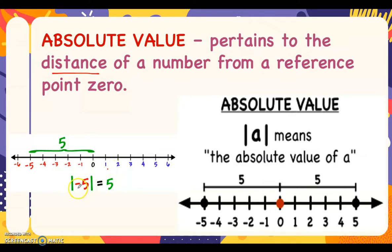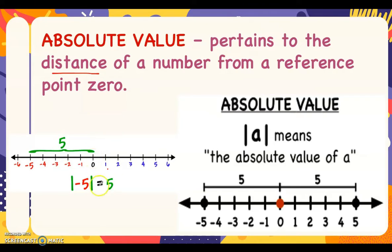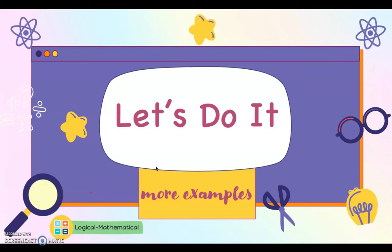For example, if we get the absolute value of negative five, the absolute value — the distance — is five units from zero. From zero to negative five it is five units, so the absolute value of negative five is five.